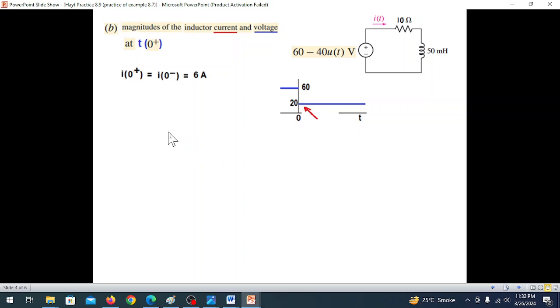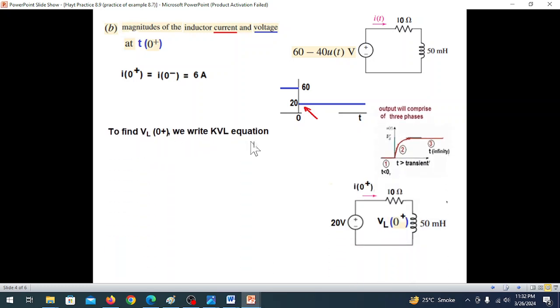To find VL(0+), we write KVL equation. After zero, the circuit is in transient state with voltage 20V. So -20 + i(0+) × 10 + VL(0+) = 0. Putting i(0+) = 6, we get VL(0+) = -40V. The magnitude is 40 volts.